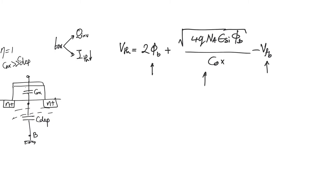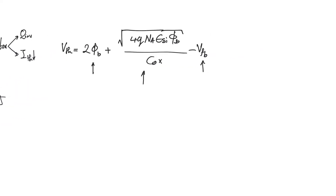Looking at the expression of V_threshold, we find that V_threshold is not a function of transistor size — it's not a function of W or L. When we considered body effect, we found that threshold voltage is a function of source potential, but at no point did we find that it was a function of either W or L.